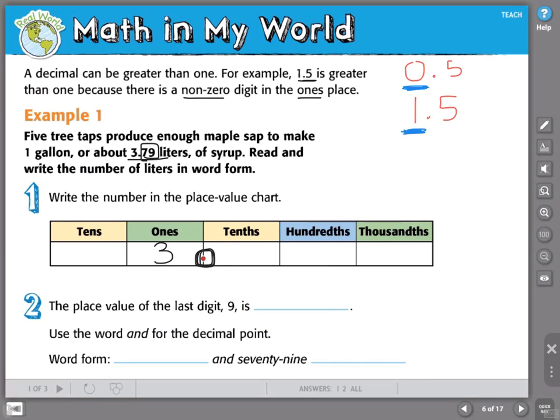In my decimal places, there's a 79. That's a 7 in the tenths place and a 9 in the hundredths place.